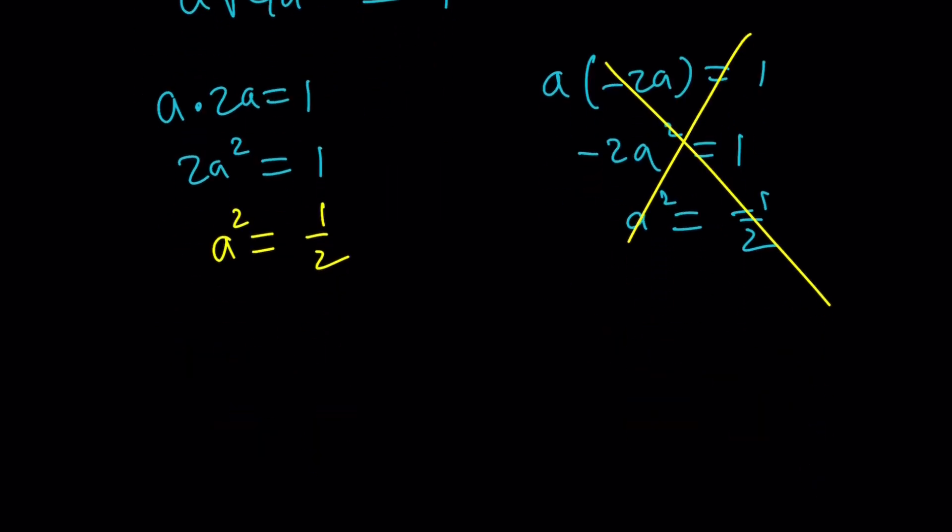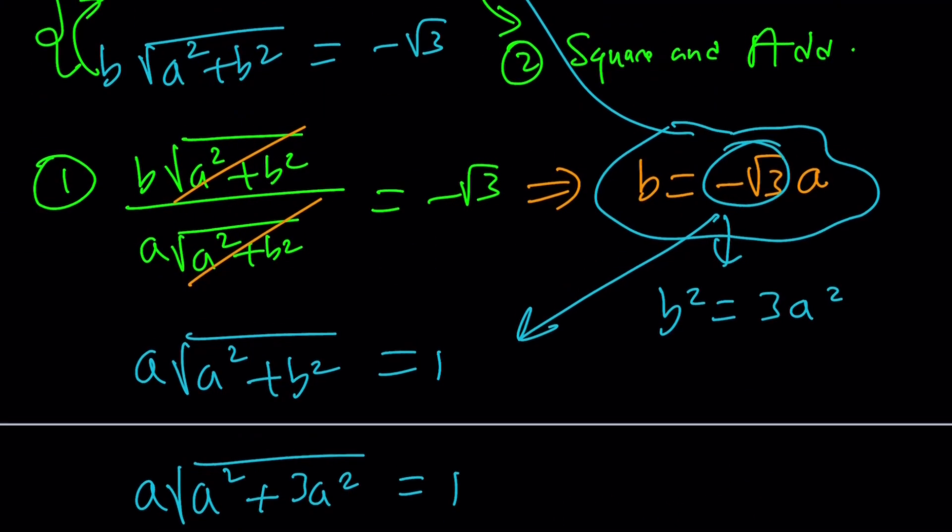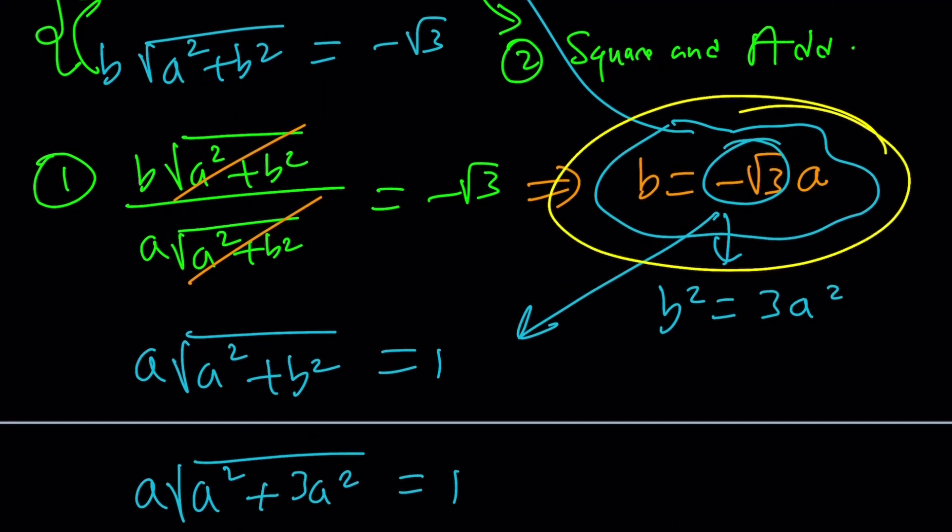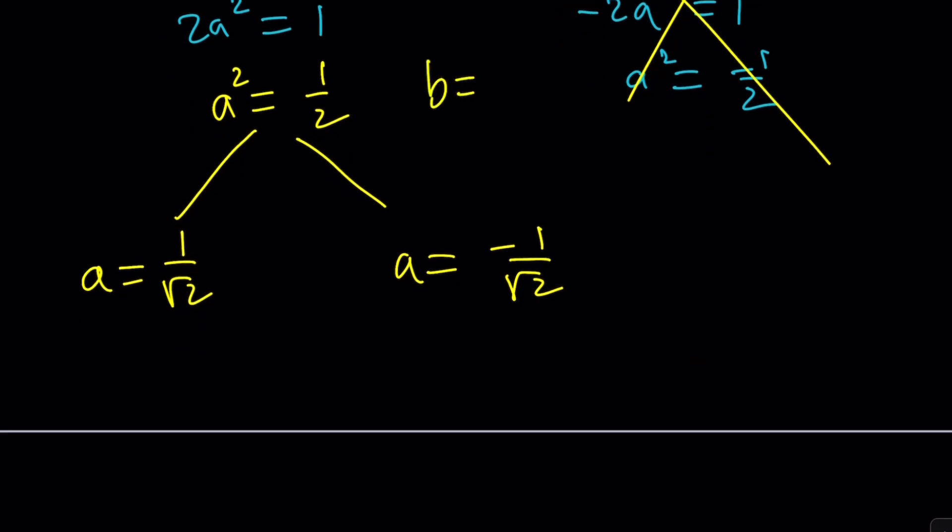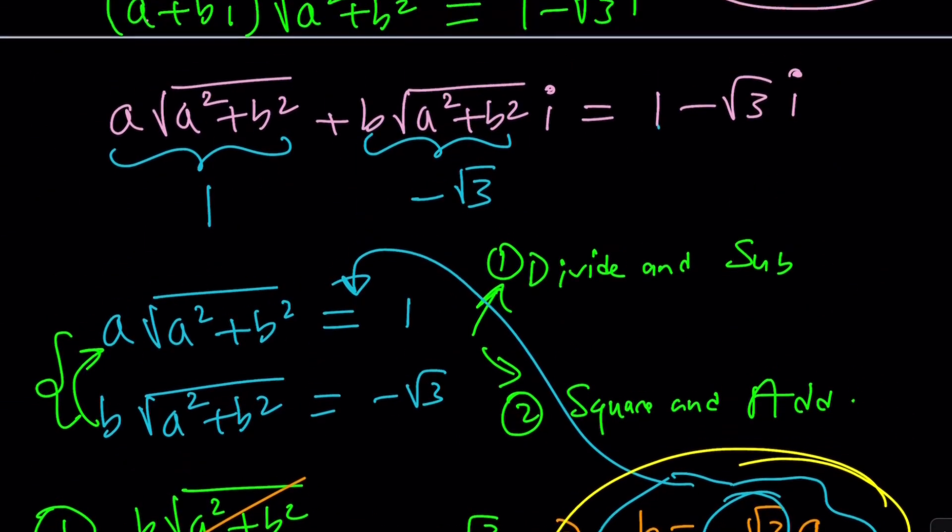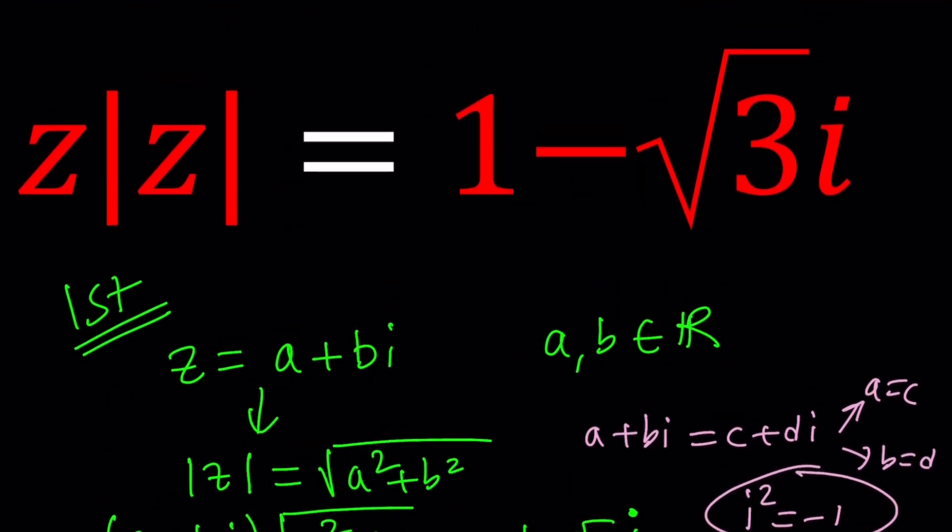A squared equals 1 half. But guess what? This gives us two values for A. Let's go ahead and take a look. A equals 1 over root 2 or A equals negative 1 over root 2. And of course, depending on these values of A, we're going to get different values for B because B and A are related with this equation, negative root 3 A. So, this is our relationship. And now, B is going to be negative root 3 times A. So, if A is 1 over root 2, B is going to be negative root 3 over root 2. And otherwise, it's going to be root 3 over root 2. Notice that A and B have different signs. That kind of makes sense, because if you look at the original problem, that should give you a good clue. Here, they have different signs. So, it should be normal.